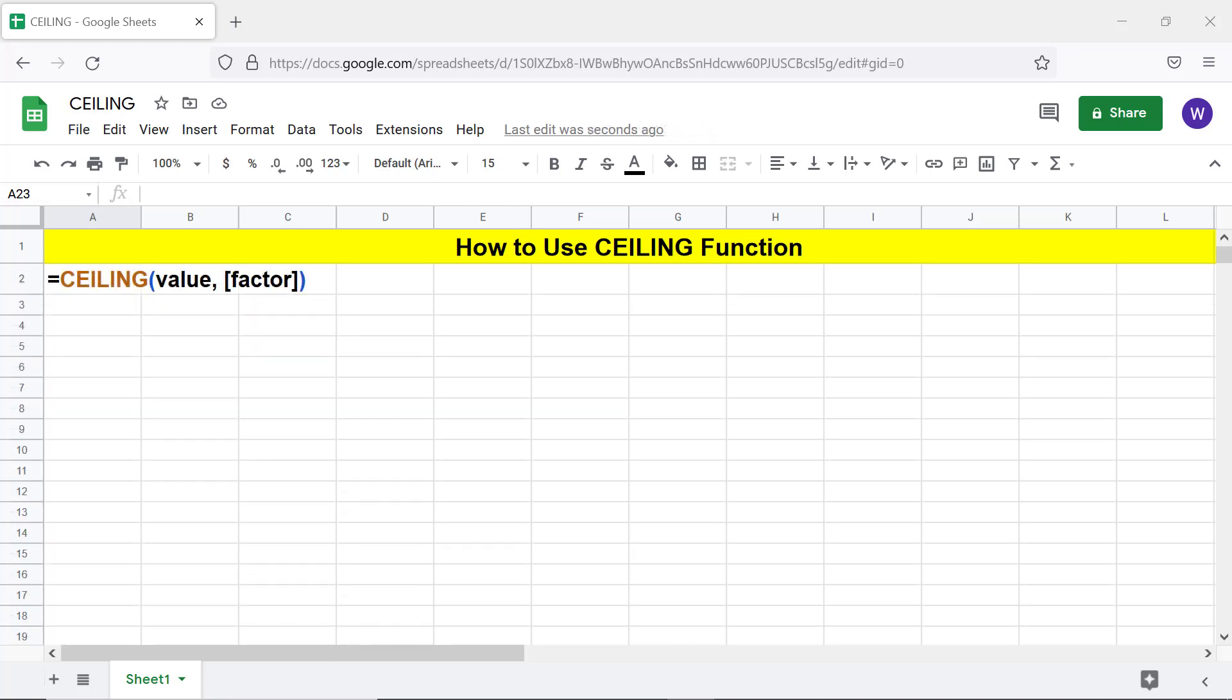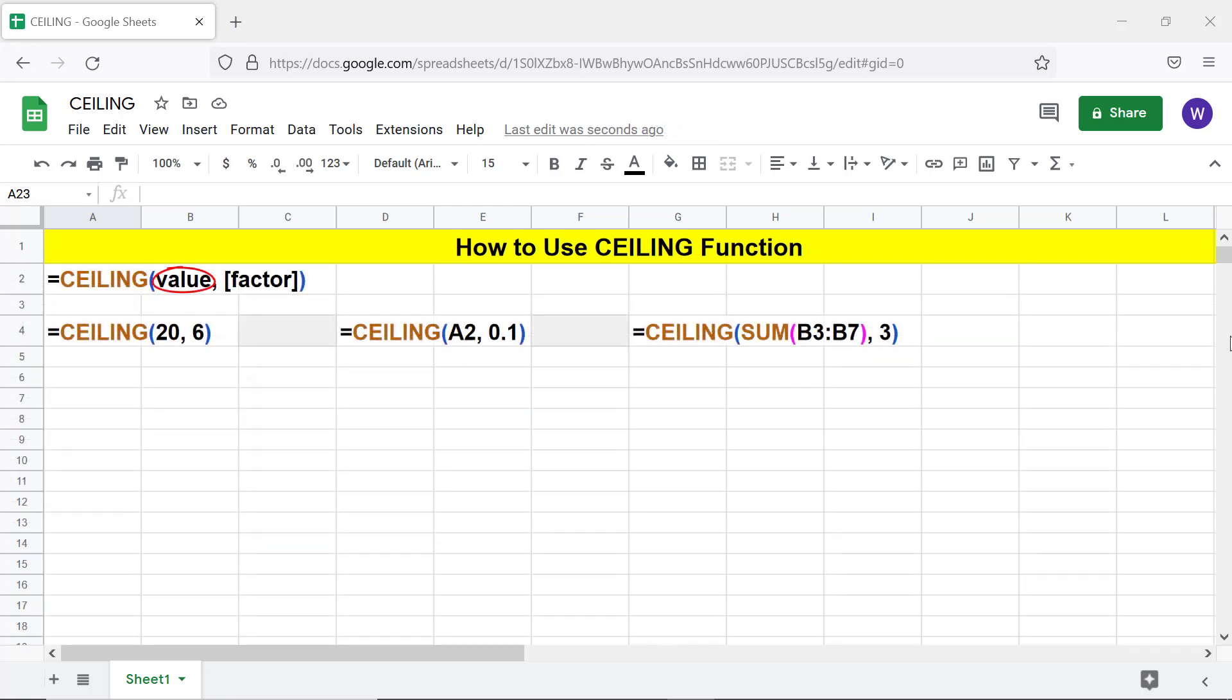Let's look at the format of the CEILING function formula. Here are three examples. Value is the number to round up and can be, for example, a hard-coded number, cell address, or formula that returns a number. Factor is a number and is optional. The value is rounded to the nearest multiple of the factor.